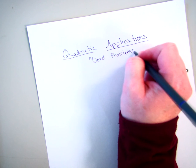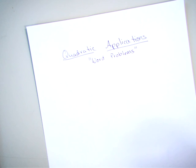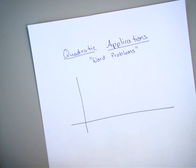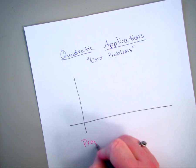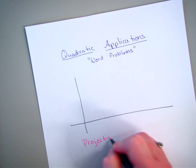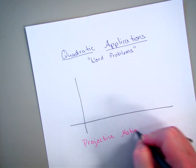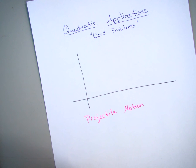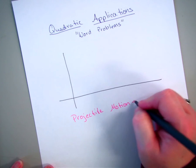And there are two kinds of word problems that they are going to ask you. The first kind is what we call projectile motion. So projectile motion, what that means is that some kind of object that is launched in the air.